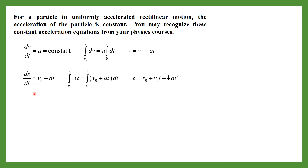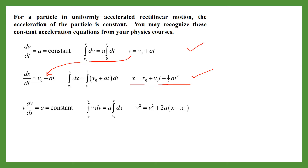Similarly, velocity equals dx/dt. Substituting v = v₀ + at in place of v and integrating again, we obtain x = x₀ + v₀t + ½at². This equation gives position, while the previous equation gives velocity. You can also obtain this second equation from the first using derivative formulas.